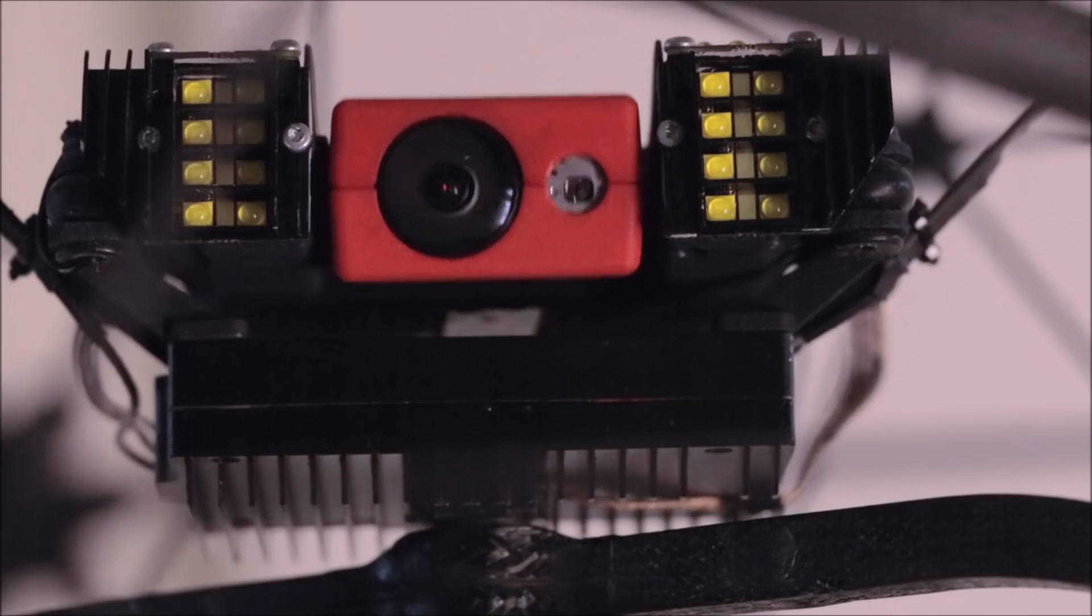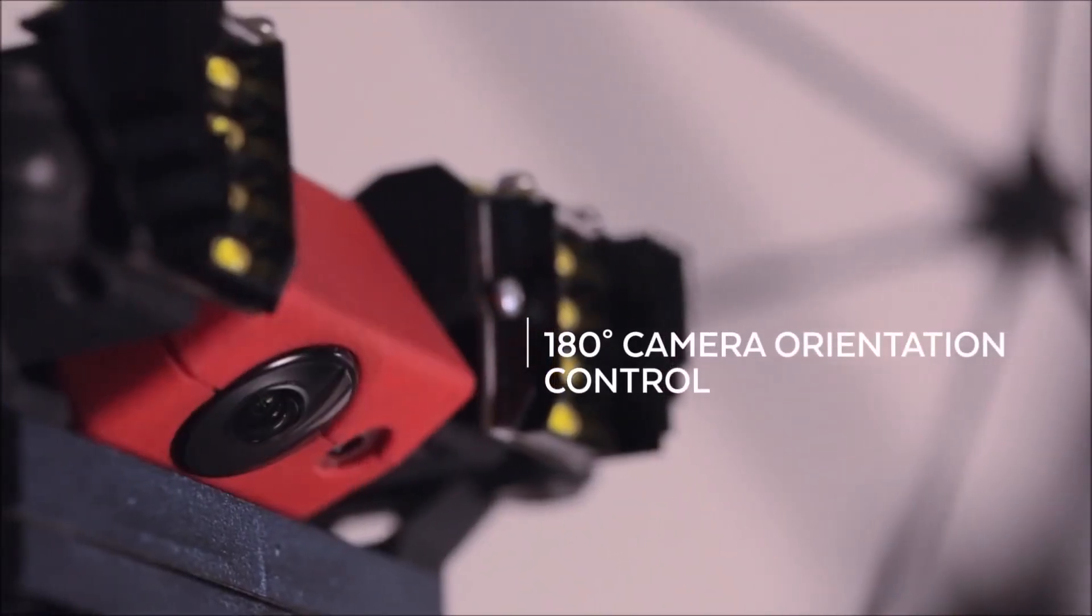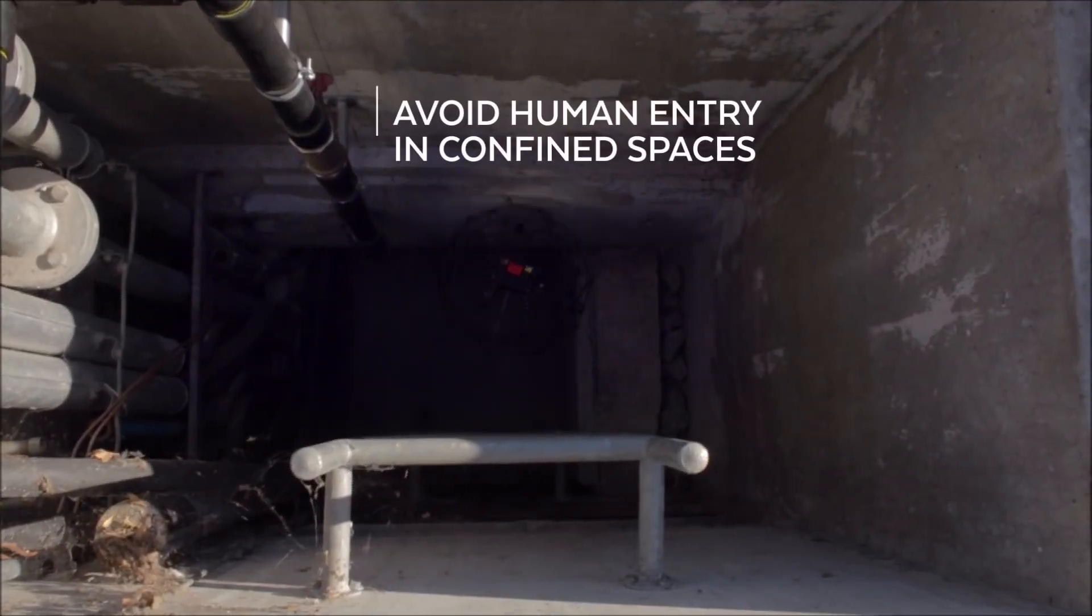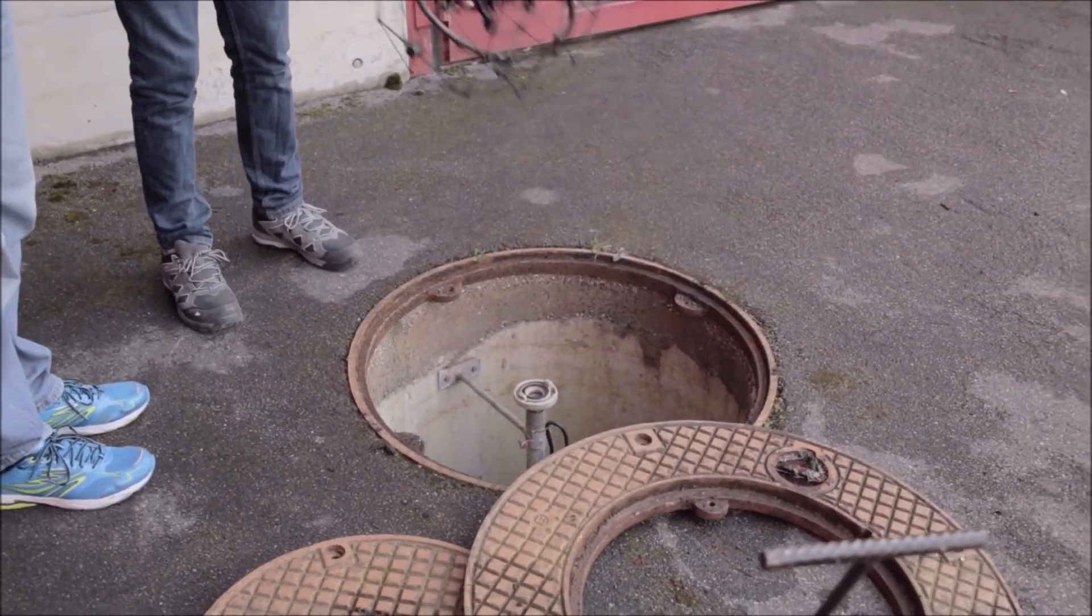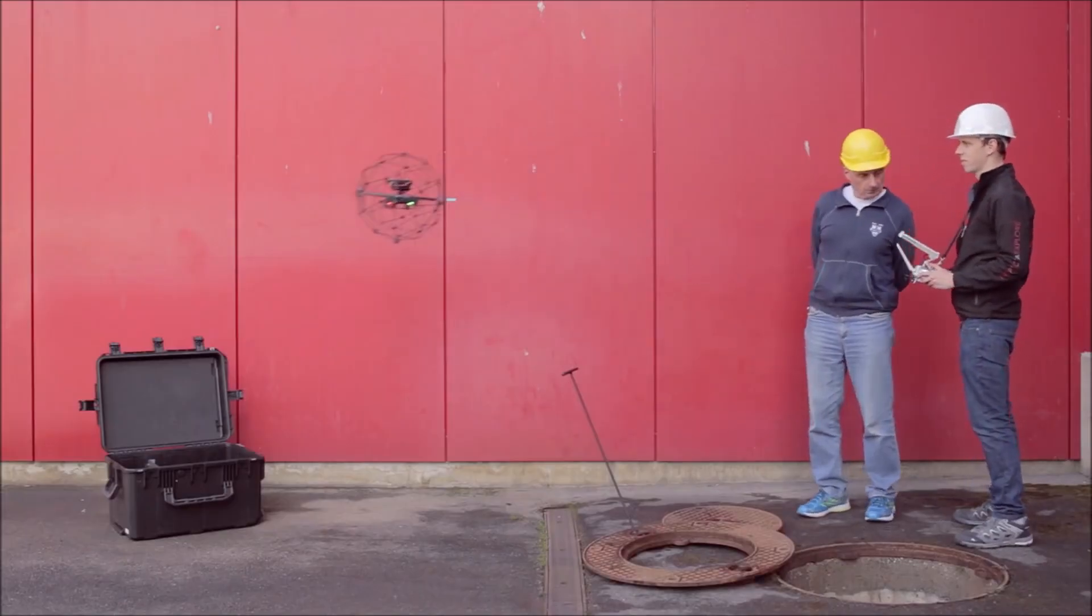The payload head tilts over 180 degrees. Elios avoids human entry in confined spaces for visual inspection, highly reducing the risk for workers. It can be operated beyond line of sight using the robust video feedback to navigate. Instead of focusing on avoiding obstacles, you can use obstacles to find your way and roll on the surfaces in addition to flying.